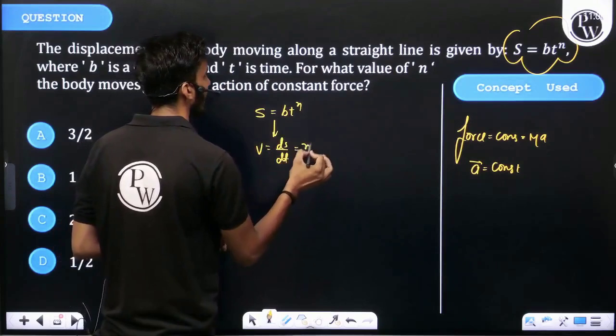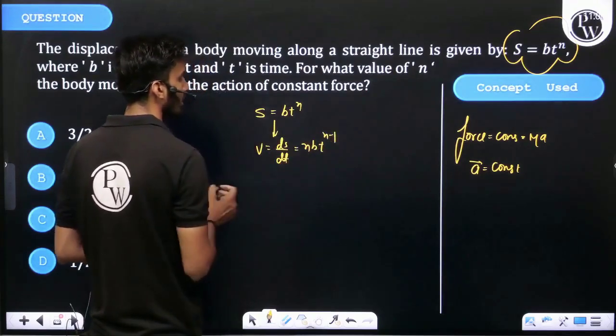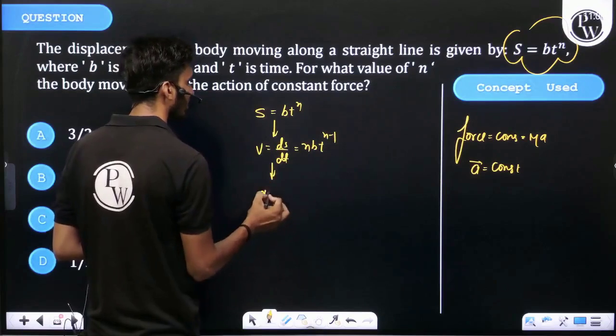Again differentiate: acceleration is equal to dv by dt.